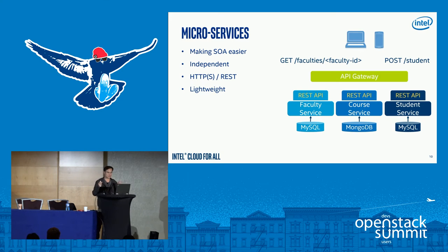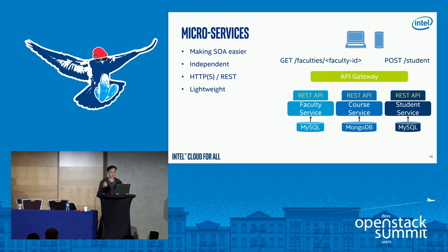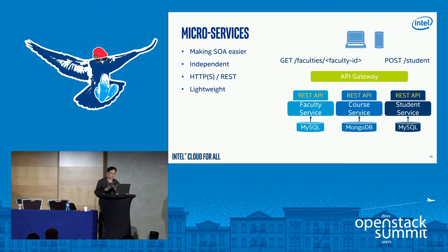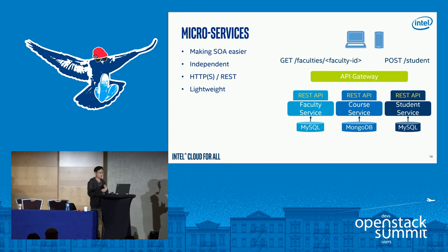The key concept in REST is about resources, which typically represent business objects such as customers or products. We use a CRUD model — create, read, update, and delete — together with standard HTTP methods. For example, you use HTTP POST to create new resources, PUT to update a resource, GET to read resources, and DELETE to remove resources. These are some of the core concepts in microservices.